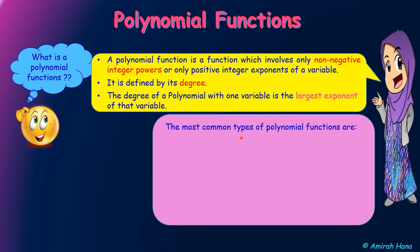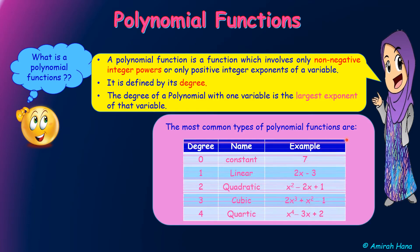The most common types of polynomial functions are: constant, where the degree equals 0; linear, where the degree equals 1; quadratic, with degree 2; cubic, with degree 3; and quartic, with degree 4.